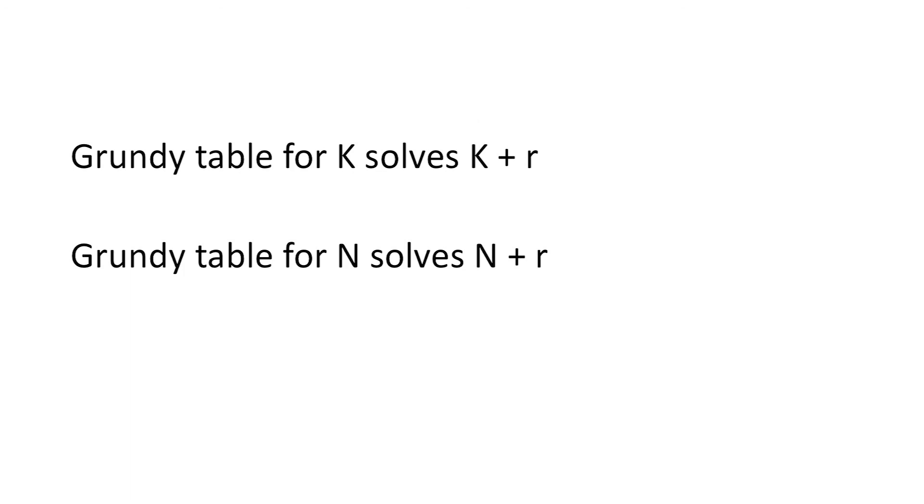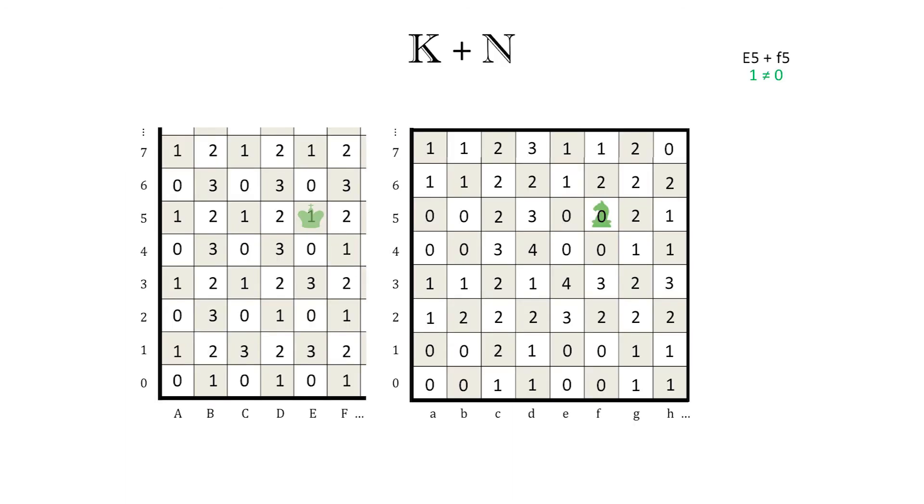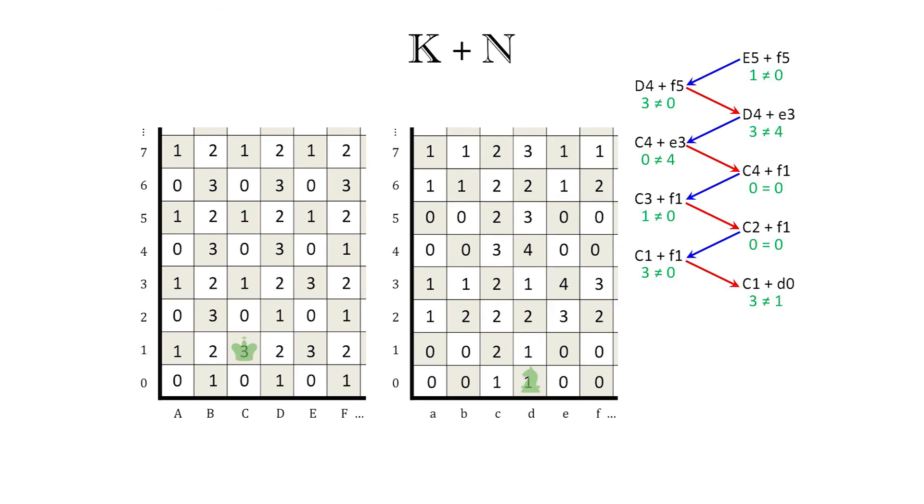We've seen that the king's Grundy table solves the game of king plus baby rook. And that the knight's Grundy table solves the game of knight plus baby rook. And that the Grundy tables for king and knight also work for the sum of a king and a knight. To be specific, let's take a closer look at our students' earlier game of king plus knight. The king started at e5 and the knight at f5. After 8 moves, they reached the position with the king at c1 and the knight at d0, with Grundy numbers 3 and 1. Blue's next move was knight from d0 to b1, which left mismatched Grundy numbers 3 and 0. The correct move would have been king to b0, yielding the matching numbers of 1 and 1.